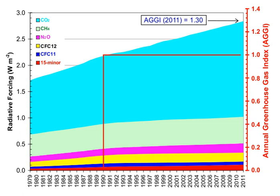A greenhouse gas is a gas that absorbs and emits radiant energy within the thermal infrared range. Greenhouse gases cause the greenhouse effect. The primary greenhouse gases in Earth's atmosphere are water vapor, carbon dioxide, methane, nitrous oxide, and ozone. Without greenhouse gases, the average temperature of Earth's surface would be about minus 18 degrees Celsius (0 degrees Fahrenheit), rather than the present average of 15 degrees Celsius (59 degrees Fahrenheit).